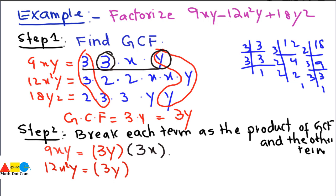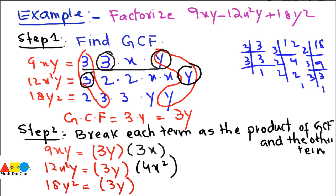For 18y squared: GCF is 3y, and what remains is 6y, since 3 times 6 = 18 and y times y = y squared. So we have broken all three terms into a combination of the GCF (3y) and the other factor: 9xy = 3y · 3x; 12x²y = 3y · 4x²; 18y² = 3y · 6y.